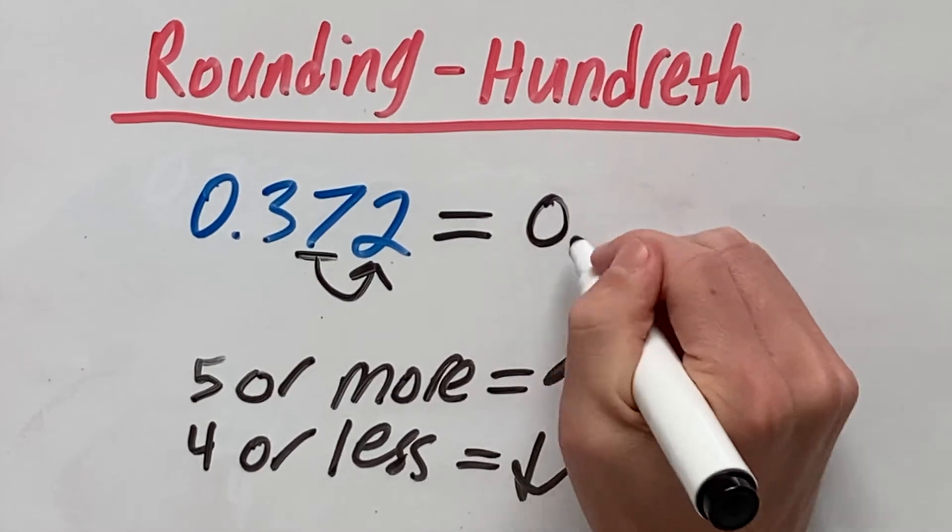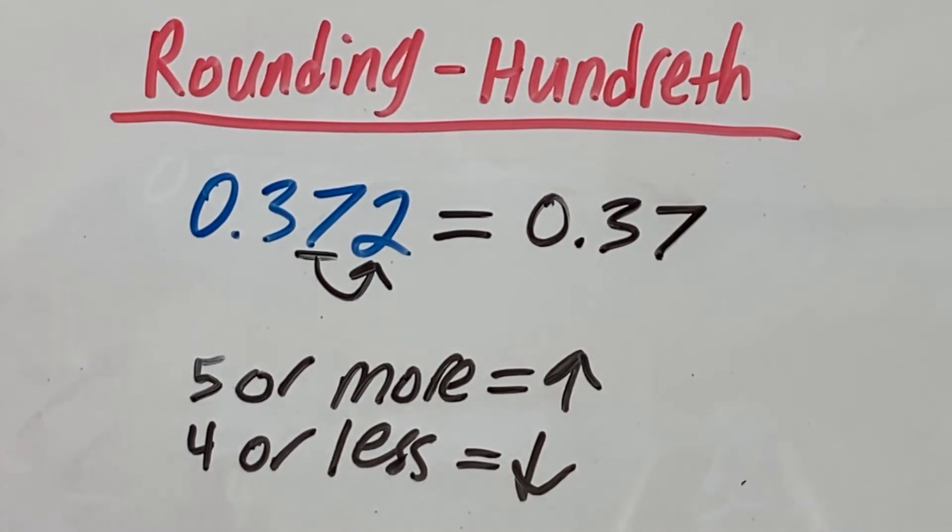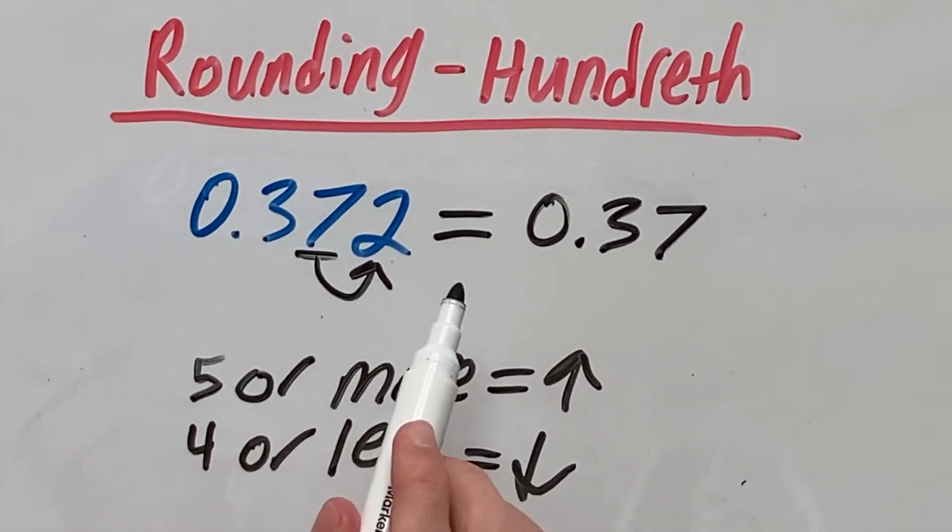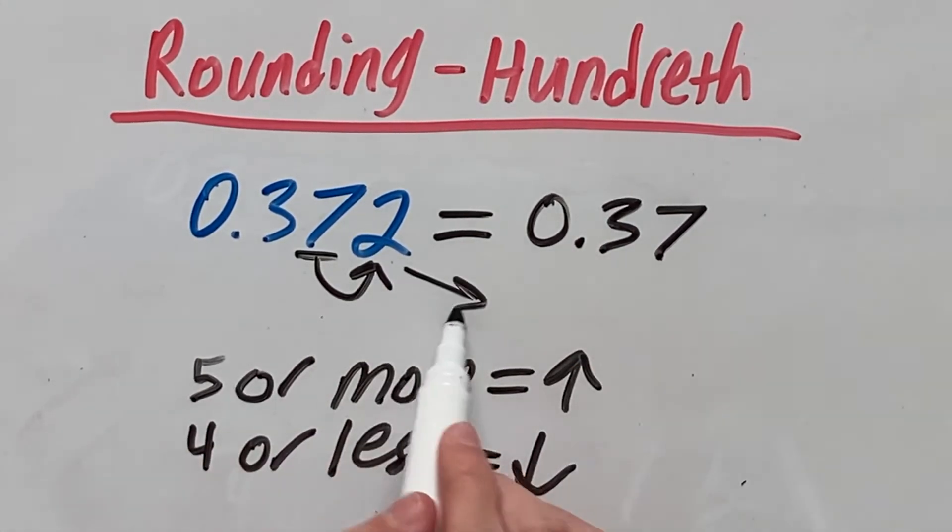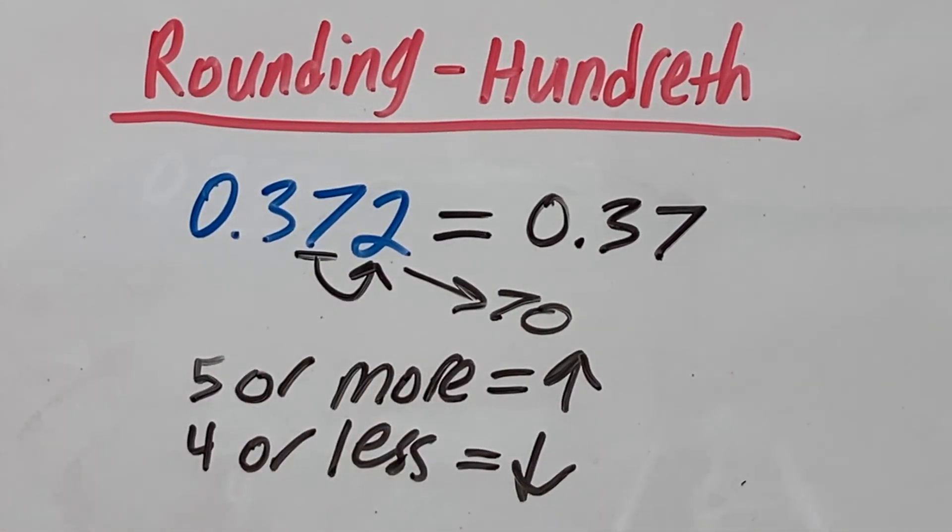Our answer would be 0.37. We don't actually move the 7 down to a 6. We just keep 7 the same. Because we're still rounding down, because the 72 is coming to 70. When you round down, you don't actually change the hundredth place to the number below, but rather just keep it the same.